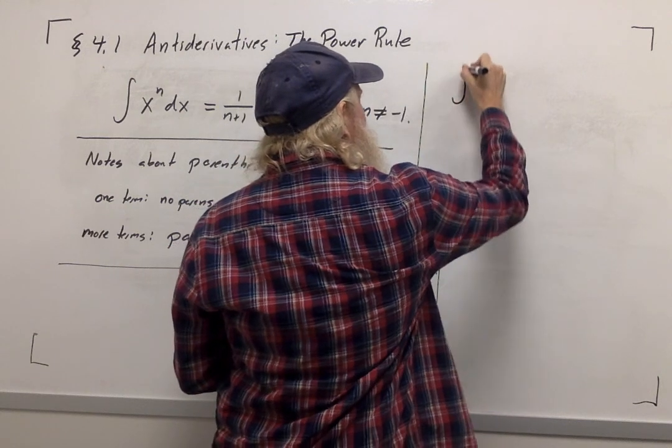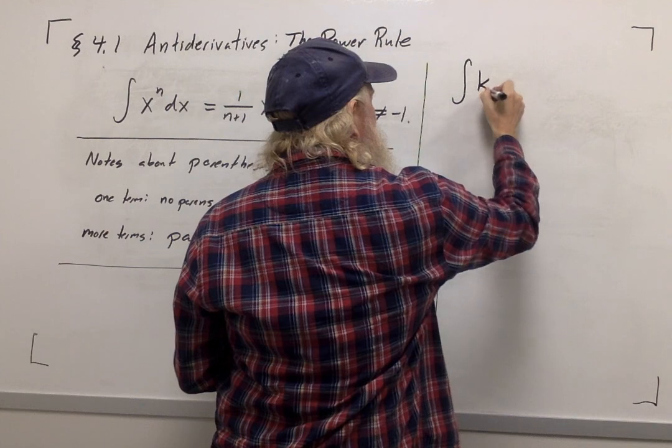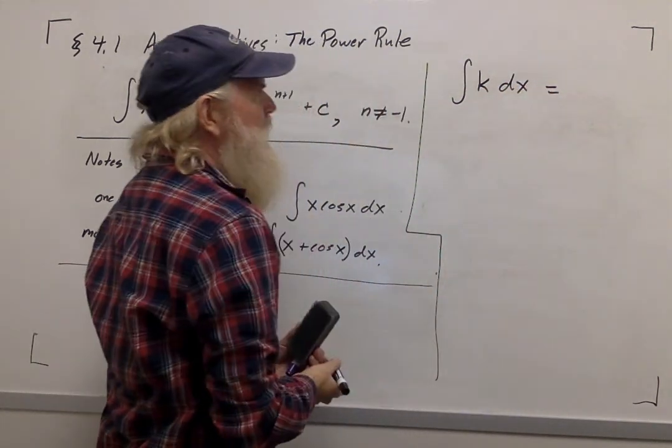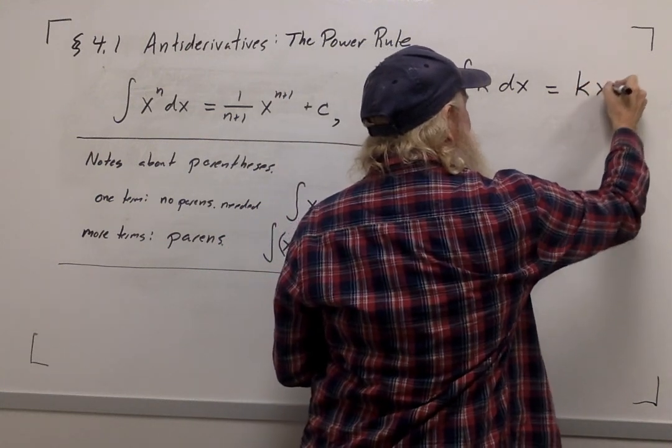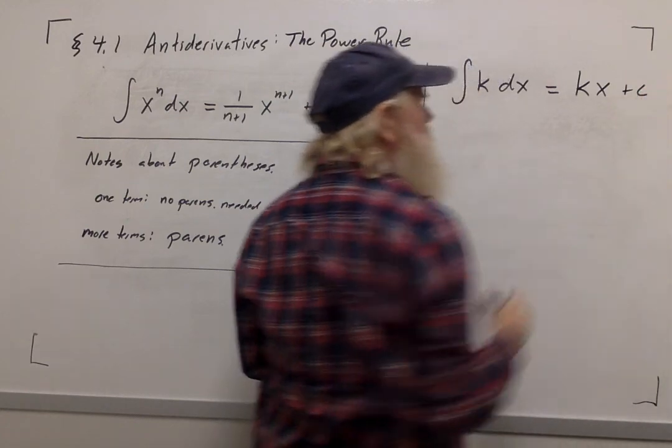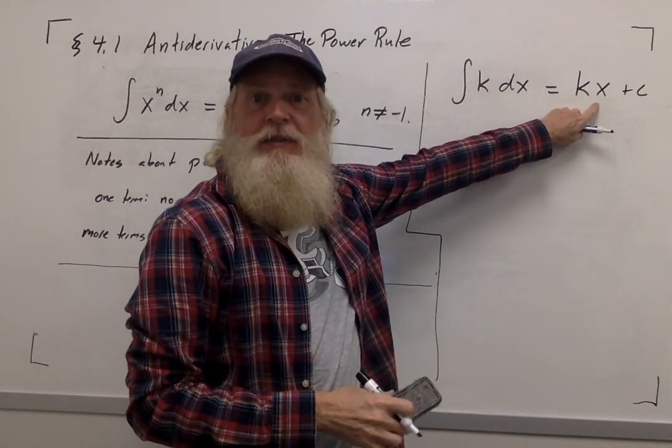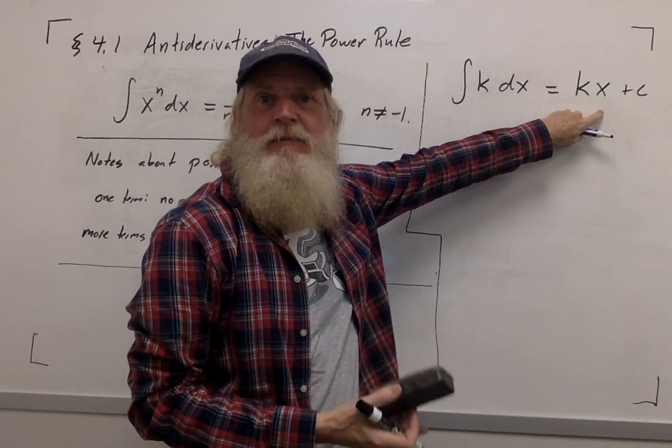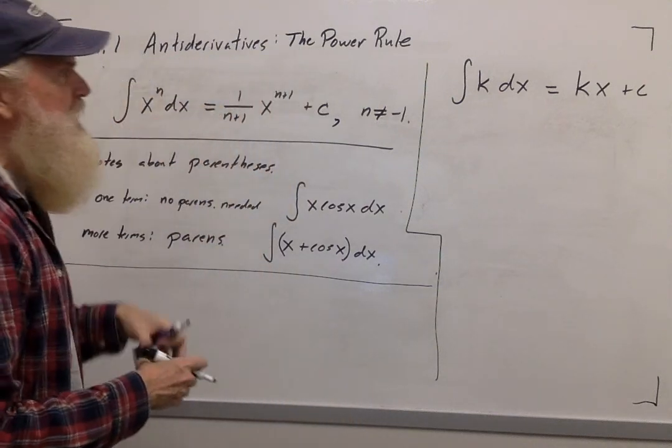One is the integral of a constant. The integral of a constant will be a constant times x. Now, if you wish to, you could just do this, check it by common sense. What is the derivative of k times x? It's equal to k.